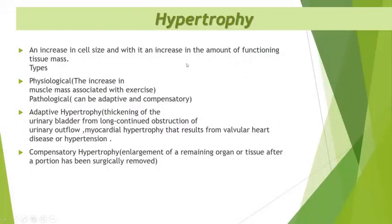Now let's move on to hypertrophy. Hypertrophy is an increase in cell size with an increase in the amount of functioning tissue mass. The types include physiological, with increase in muscle mass associated with exercise. In pathological hypertrophy, it can be adaptive or compensatory. Adaptive hypertrophy includes thickening of the urinary bladder from long-continued obstruction of urinary outflow, and myocardial hypertrophy resulting from valvular heart disease or hypertension. Compensatory hypertrophy is the enlargement of a remaining organ or tissue after a portion has been surgically removed.